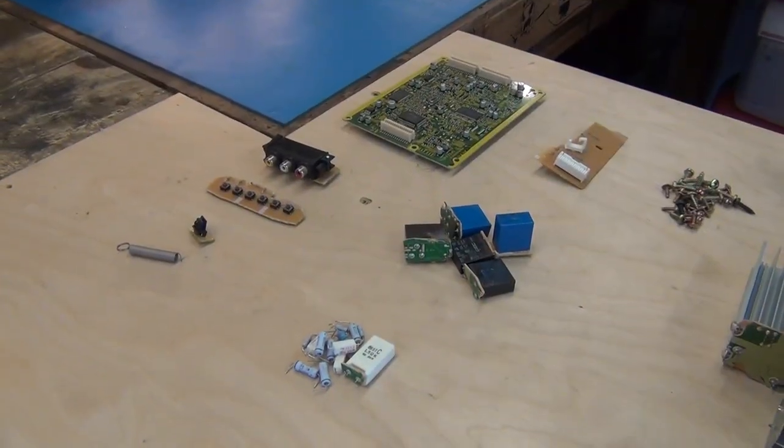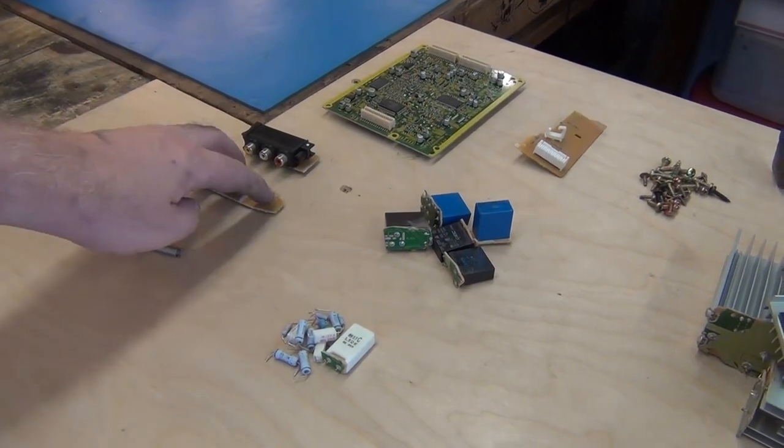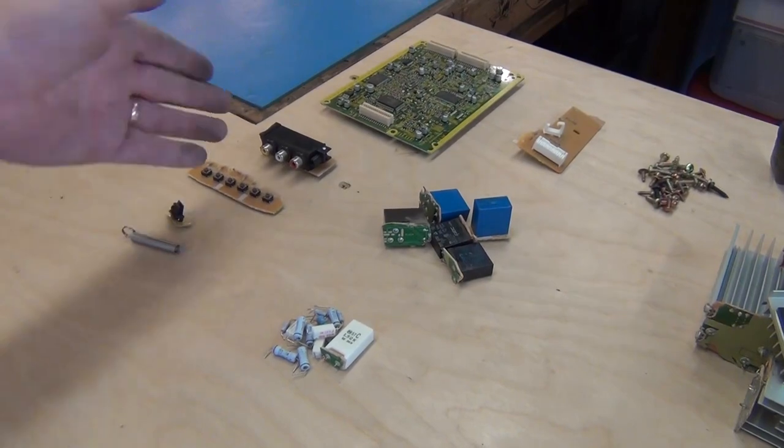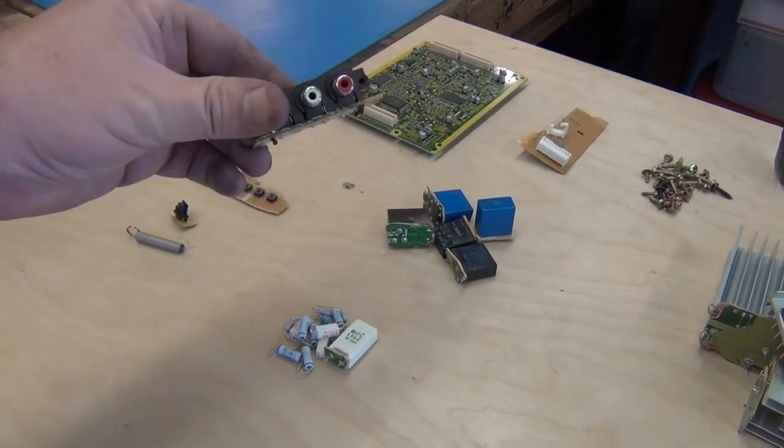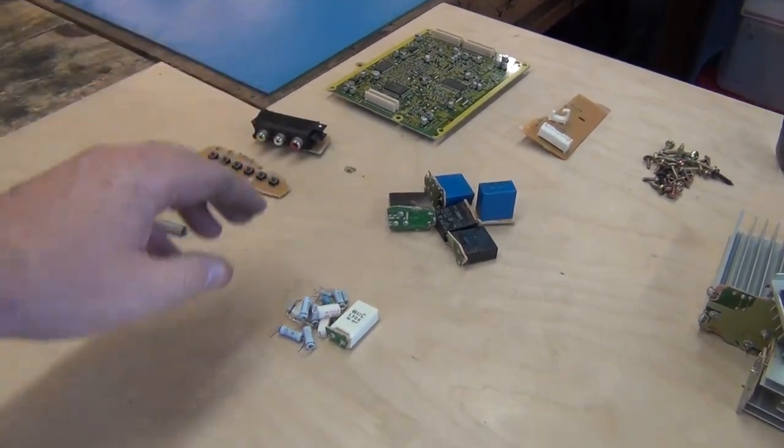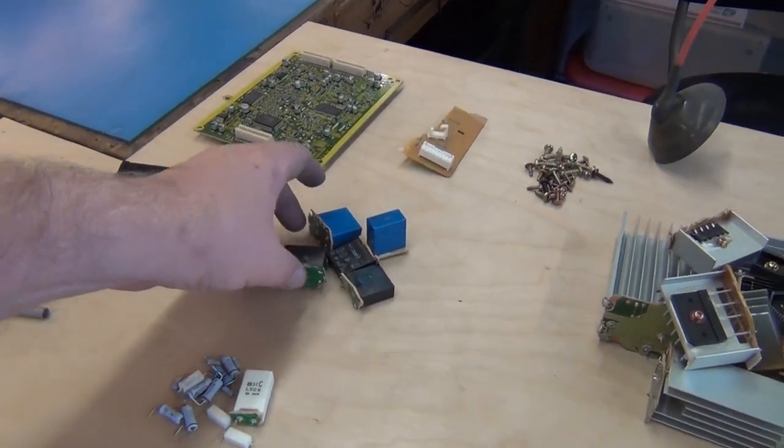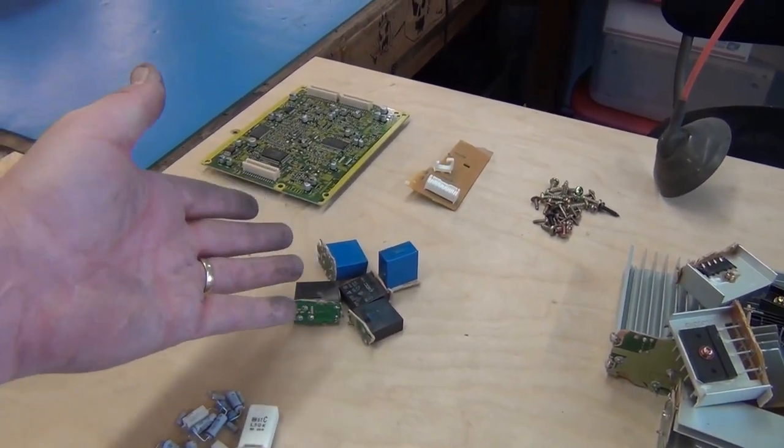So in about 20 minutes worth of work, this is what I have. Some springs, some buttons, audio, a visual audio board that I can use for some. I actually have a project in mind for that. Some high wattage resistors, small pile. This is from one television. This is a 27-inch television.